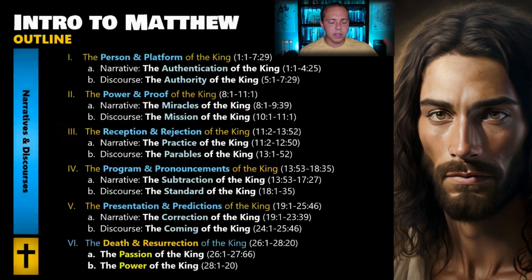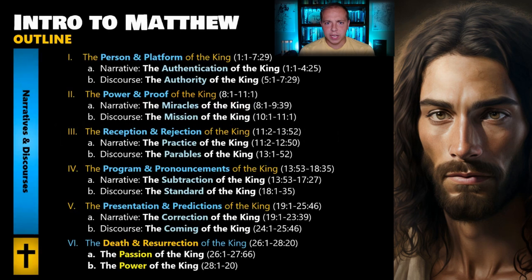People debate on how exactly Matthew is structured, but from my own personal study the most convincing argument is that Matthew is structured through a series of narratives and discourses — narratives and discourses — that ultimately lead to a final section at the end: the death and resurrection of Jesus. When we finish Matthew chapter four, we've finished our very first narrative section. Each narrative is going to set up the following discourse, and each discourse will serve as connective tissue between the two different narratives that bookend it.